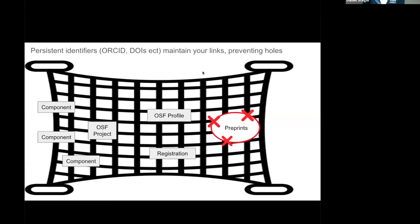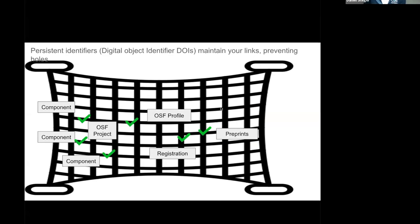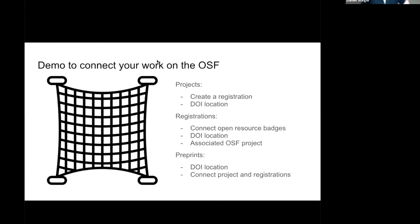One of the ways we get around that is persistent identifiers — those externally maintained links. We use Datasite and CrossRef to help maintain each one of those links. So if you're trying to connect your preprint, your registration, your profile, all those things would be maintained through persistent identifiers. Let's take a quick look at how you can connect all these different parts of your projects, registrations, and components together.